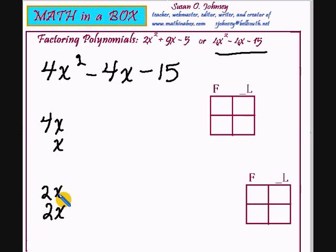Now since we have two choices for this, rather than just use one box, we're going to use two boxes. It's up to you which one you want to start with. You can begin with the 4x times x or the 2x times 2x.